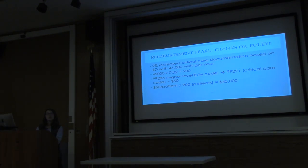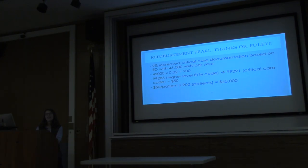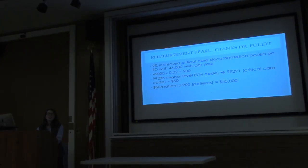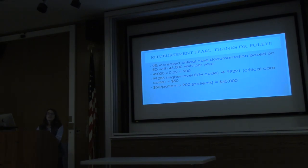Question: if there are iatrogenic complications — like a pneumothorax from a central line — do you have to deal with the complications? Can you bill for that? Yes, you can. If you drop a lung, put a chest tube in, and then have to reassess the patient, check X-rays, and manage the complication — you can absolutely bill for that time.